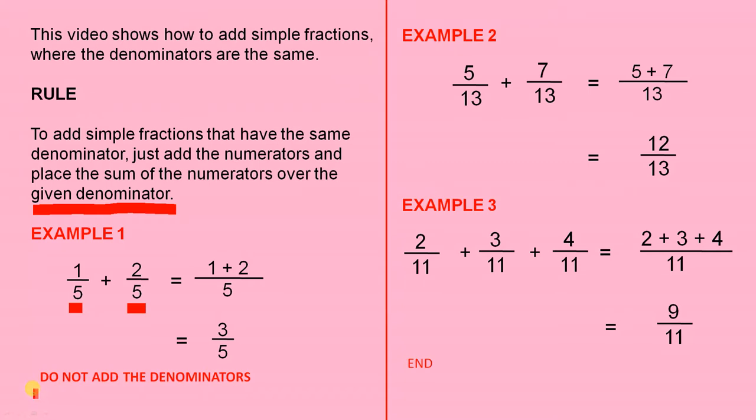Now this is very important here. Do not add the denominators. So you do not go 5 plus 5 equals 10. You are only allowed to add the numerators. Let's look at example 2.